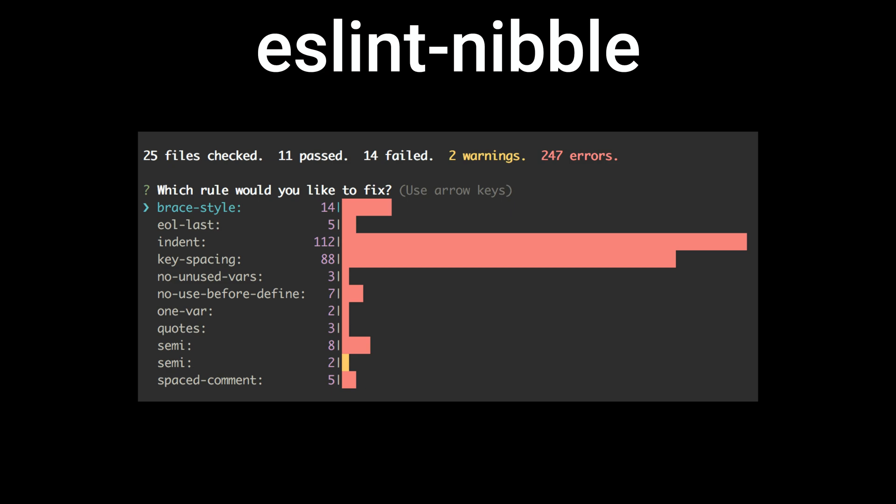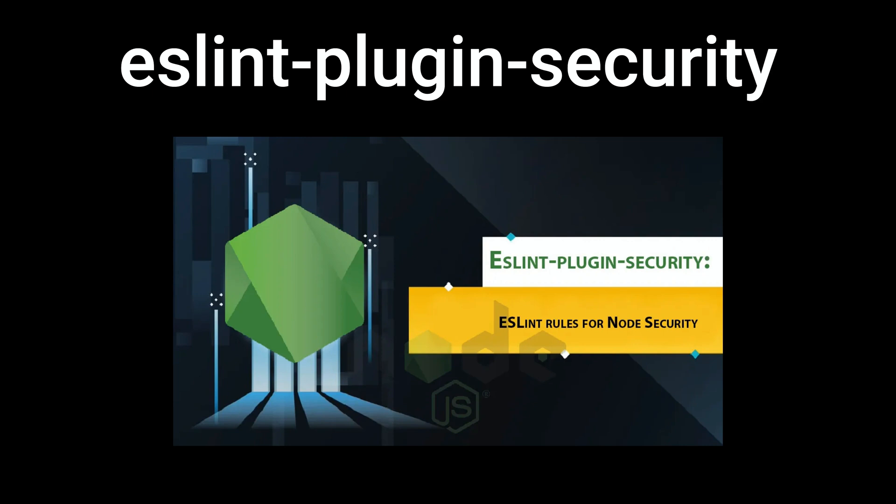ESLint Nibble plugin — sometimes running ESLint against an existing project and fixing hundreds or thousands of errors is biting off more than you can chew. Instead, ESLint Nibble will give a quick overview of your failing rules and then show the detailed error reports for one rule at a time.